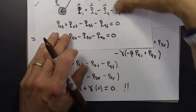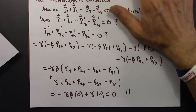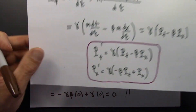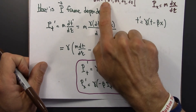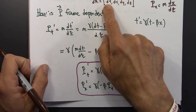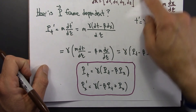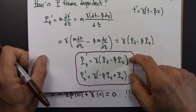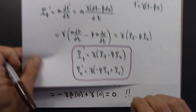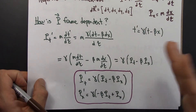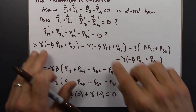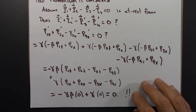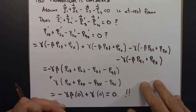So what have we shown? We constructed 4-momentum based on special relativity — uniting space and time and using proper time for the four-dimensional speed — and it transforms like x and t according to the Lorentz transformations. Using this, we asked: does this thing we built solve our conservation of momentum problem? The answer is yes. We've shown that if momentum is conserved in one frame, it's conserved in all frames. Conservation of 4-momentum is now a law of physics that's the same in all inertial reference frames, which is exactly what the principle of relativity requires.